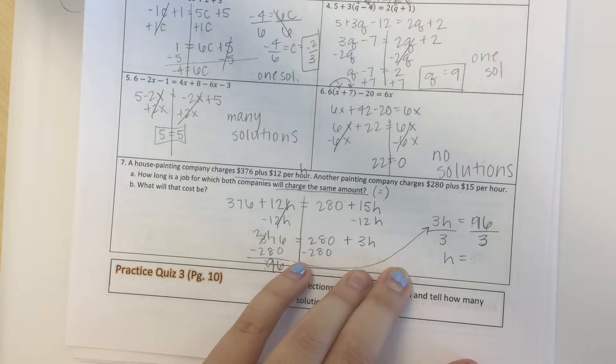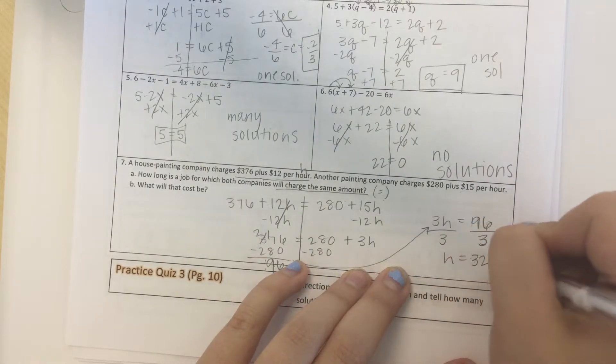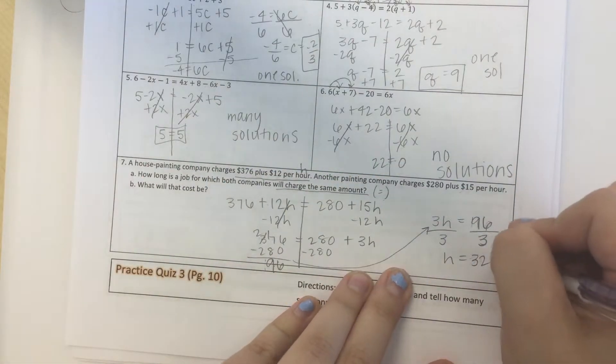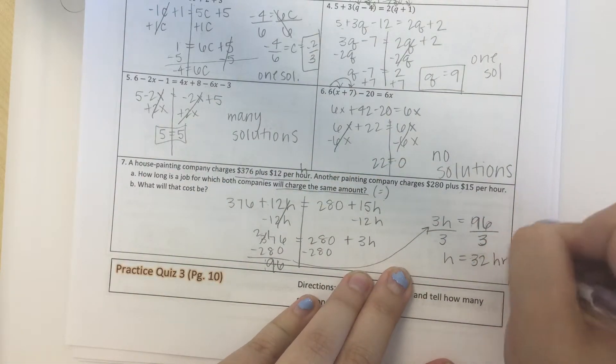Just check, 96 divided by 3 is 32, I was right. So 32 hours is how long it will take for the jobs to charge, or for the companies to charge the same amount.